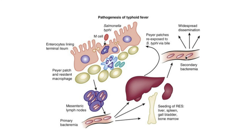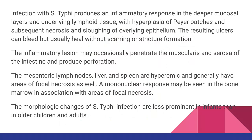From the blood stream, the organisms disseminate widely and again reach the Peyer's patches, causing ulceration. Infection with S. typhi produces an inflammatory response in the deeper mucosal layers and underlying lymphoid tissue, with hyperplasia of the Peyer's patches, and sometimes necrosis and sloughing of the epithelium causing ulcerations.